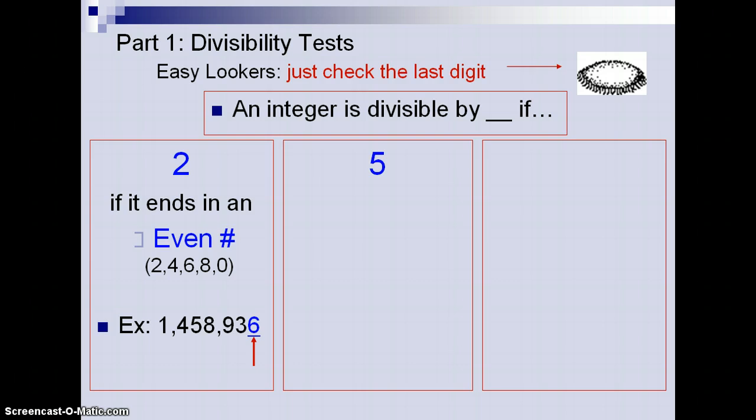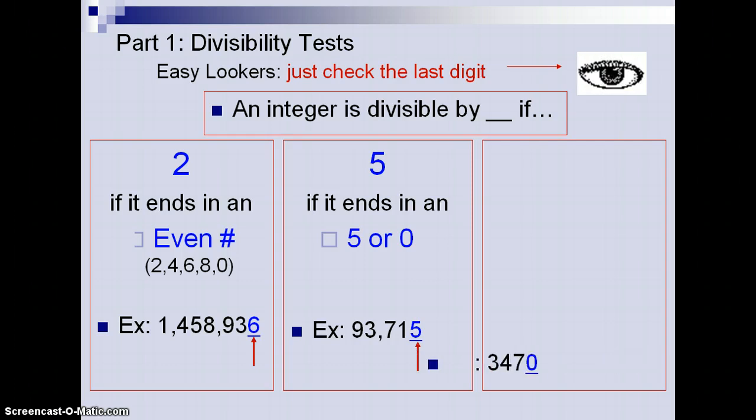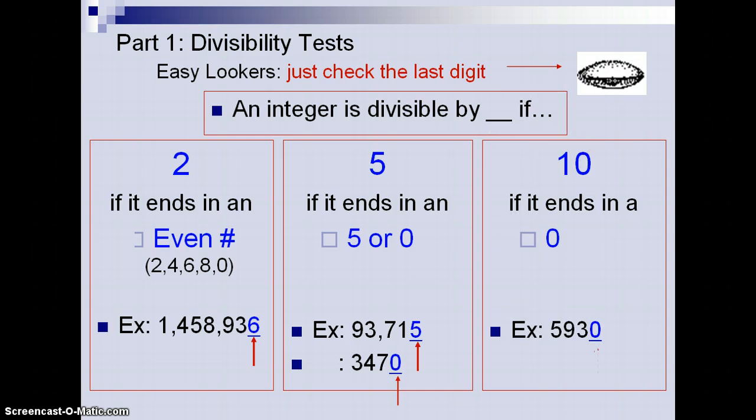If a number is divisible by 5, then it would end in 5 or 0. And if it can be divided by 10, then the number ends in 0. An example would be 5,930, where the 0 means that whole number can be divided by 10.